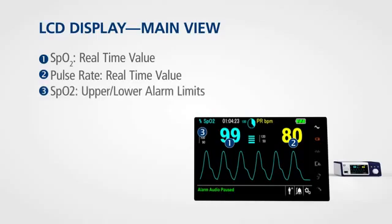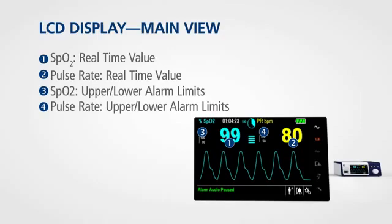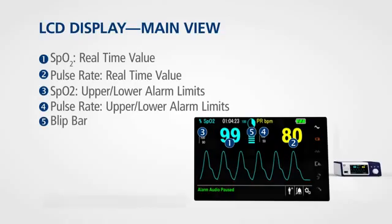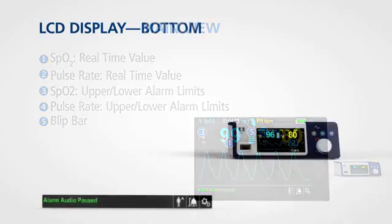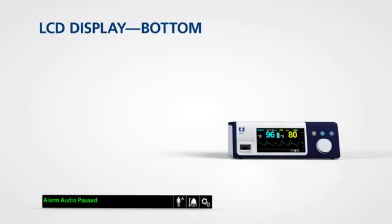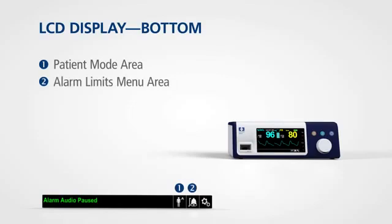The main view also shows upper and lower alarm limits for SPO2 and pulse rate, and includes a blip bar display that indicates pulse beat and relative pulse amplitude. A bar along the bottom of the display provides informative messages and indicators for the patient mode area, the alarm limits menu, and the options menu.